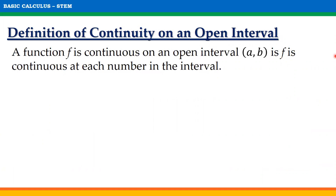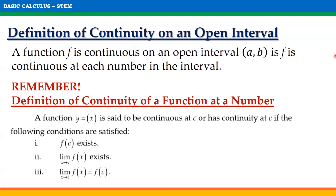Remember that in an interval, we are talking of several values within an open or closed interval. We can define the continuity of a function on an open interval as follows: a function f is continuous on an open interval (a, b) if f is continuous at each number in the interval. We need to remember the conditions for continuity at a number, and we can simply consider the third condition since it summarizes the other two.